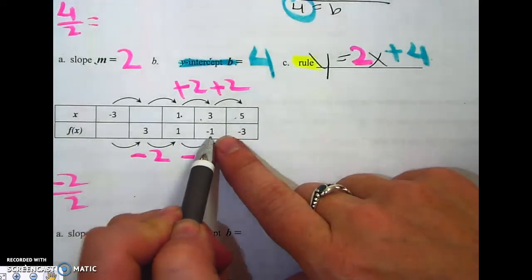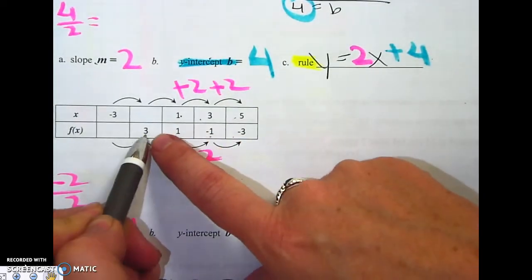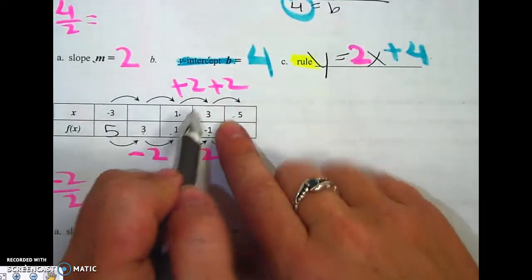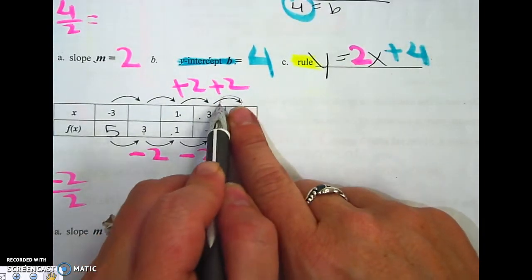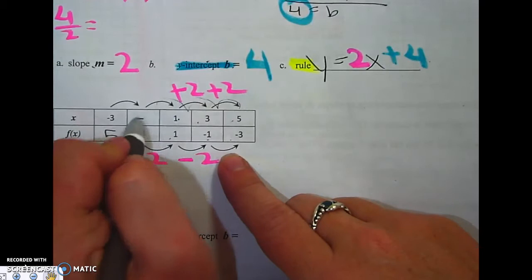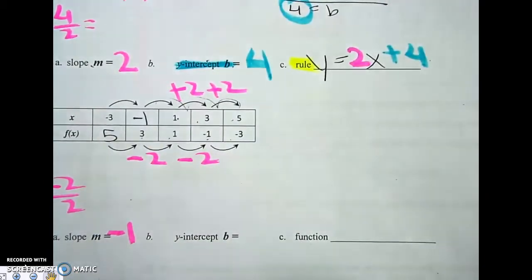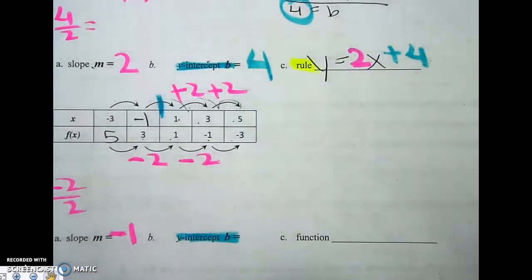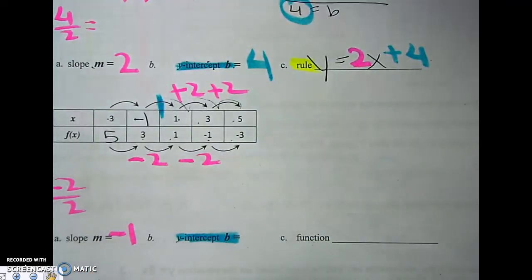Let's fill this in. Negative 3, negative 1, 1, 3, 5. If I'm going backwards instead of going plus 2, minus 2, minus 2, minus 2, that's negative 1. So if I'm trying to get my y-intercept, it's right in the middle here. That's too hard to figure out. So remember what I do.